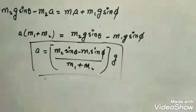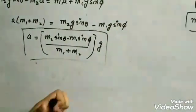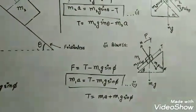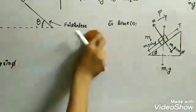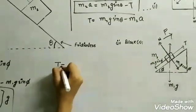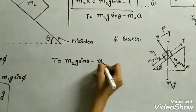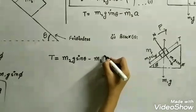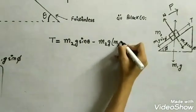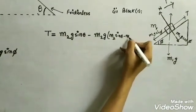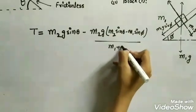Now we find the tension by substituting the value of a into the first equation. Tension T = m2g sin theta minus m2a. Substituting the expression for a, we get T = m2g sin theta minus m2 multiplied by g(m2 sin theta minus m1 sin phi) divided by (m1 + m2).